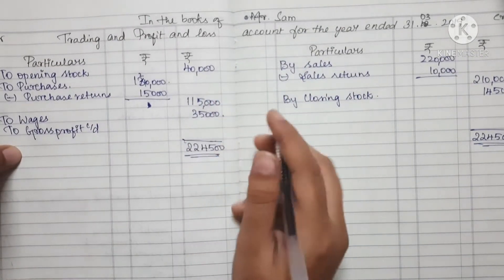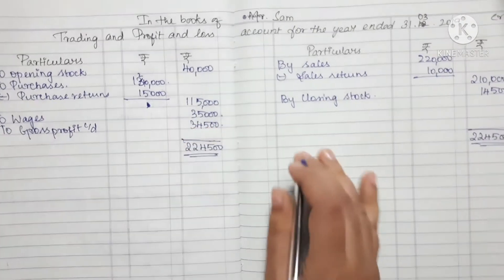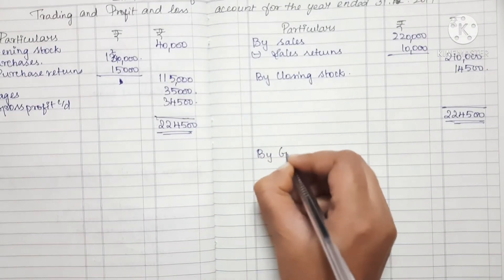This is gross profit carried down: 34,500. Now the gross profit is transferred to Profit and Loss account.